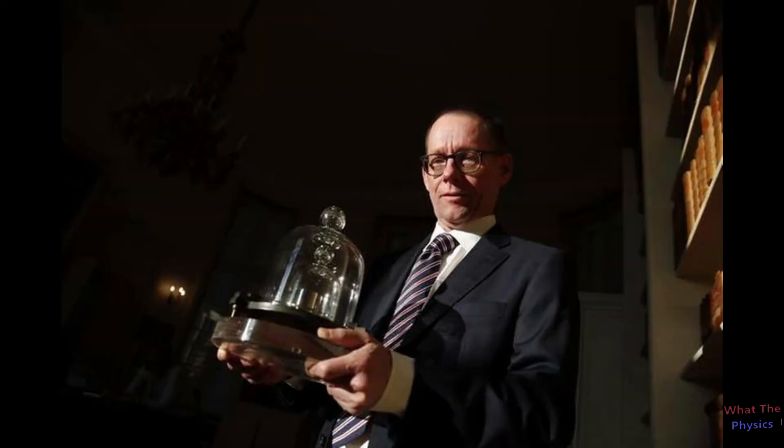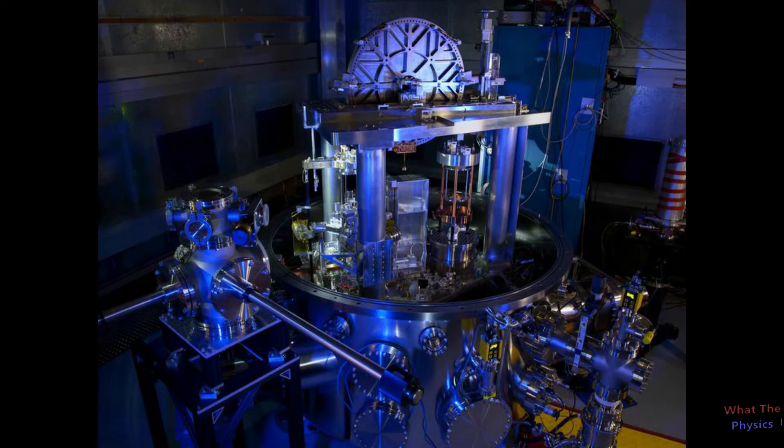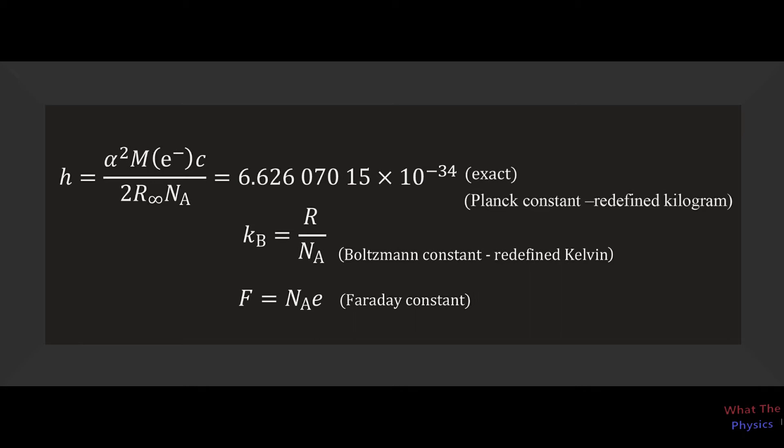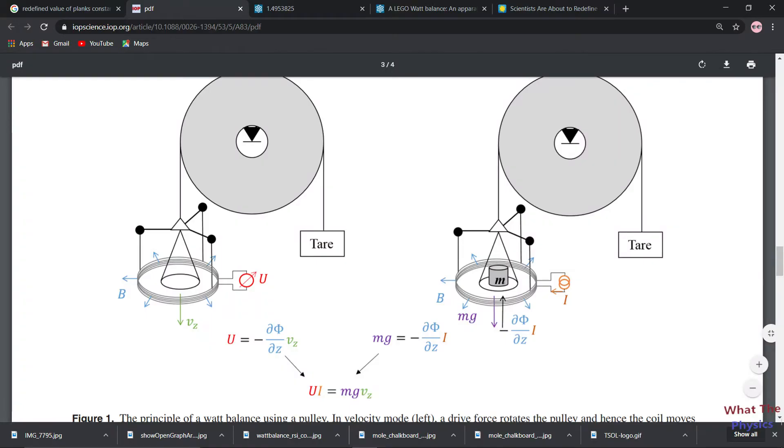Now the question is, how will we calculate one kilogram from Planck's constant? And the answer is Kibble balance. Kibble balance is a machine which uses the precise value of Planck's constant to calculate the mass. It has two phases: one, weighing phase, and second, velocity phase.